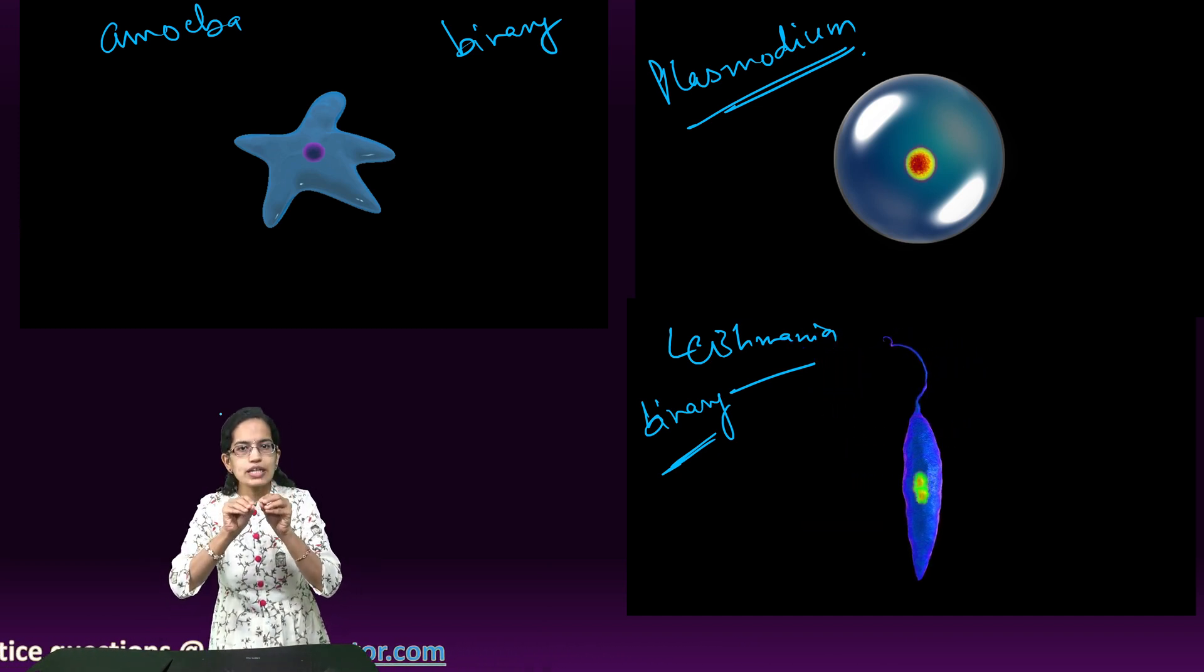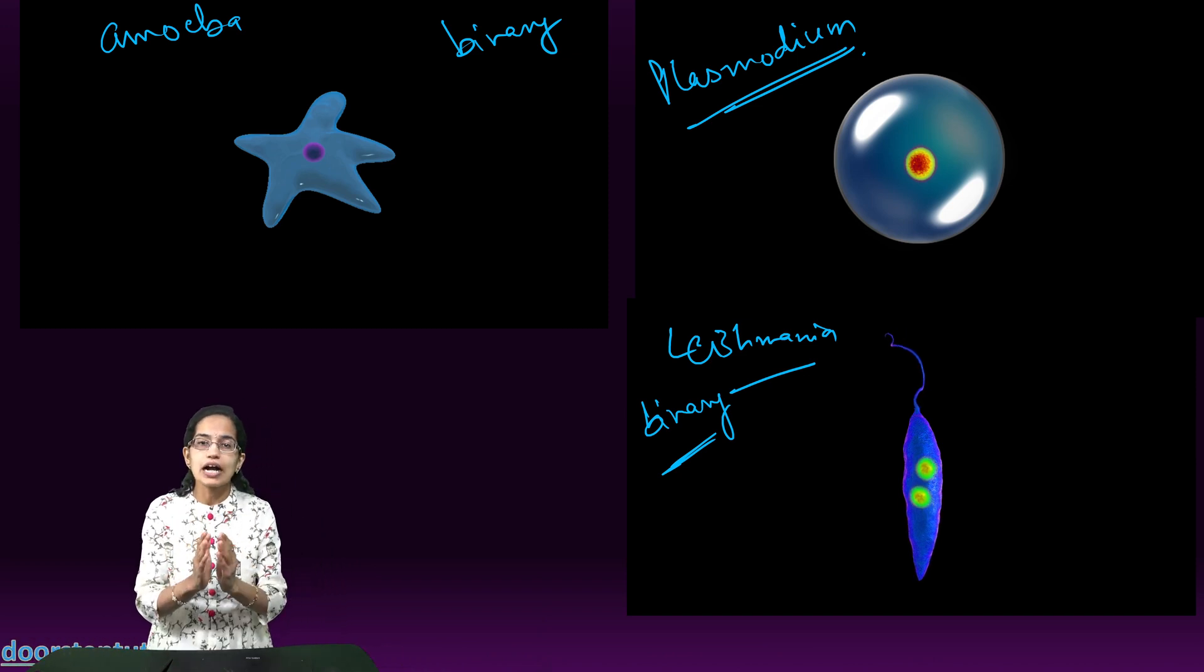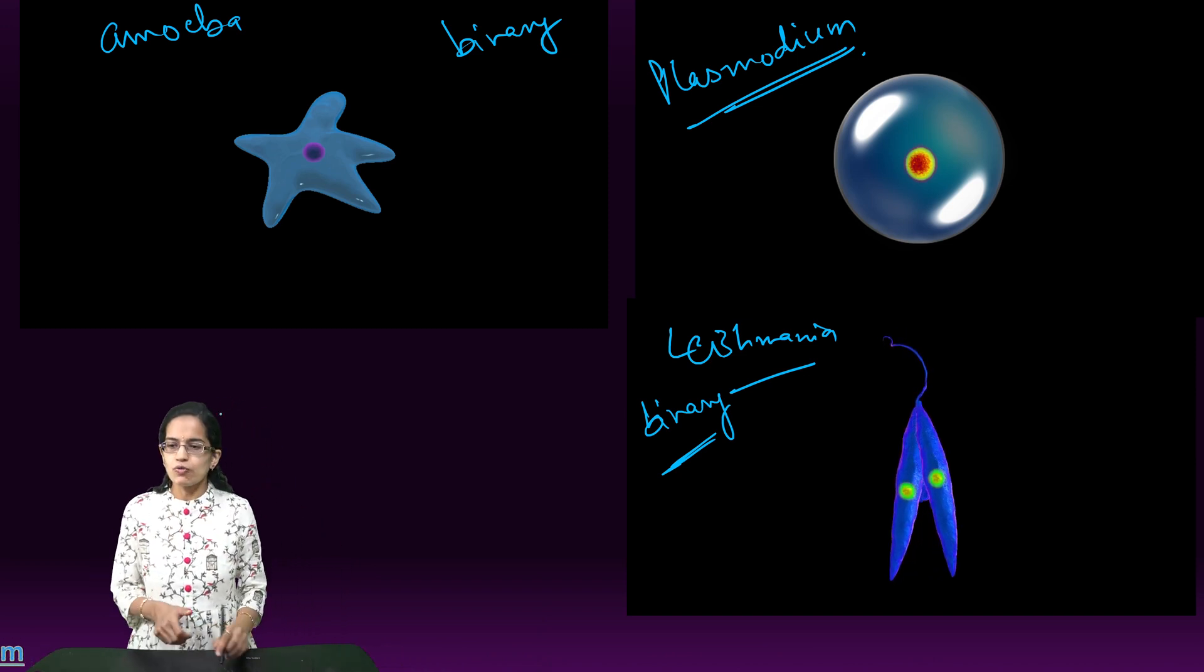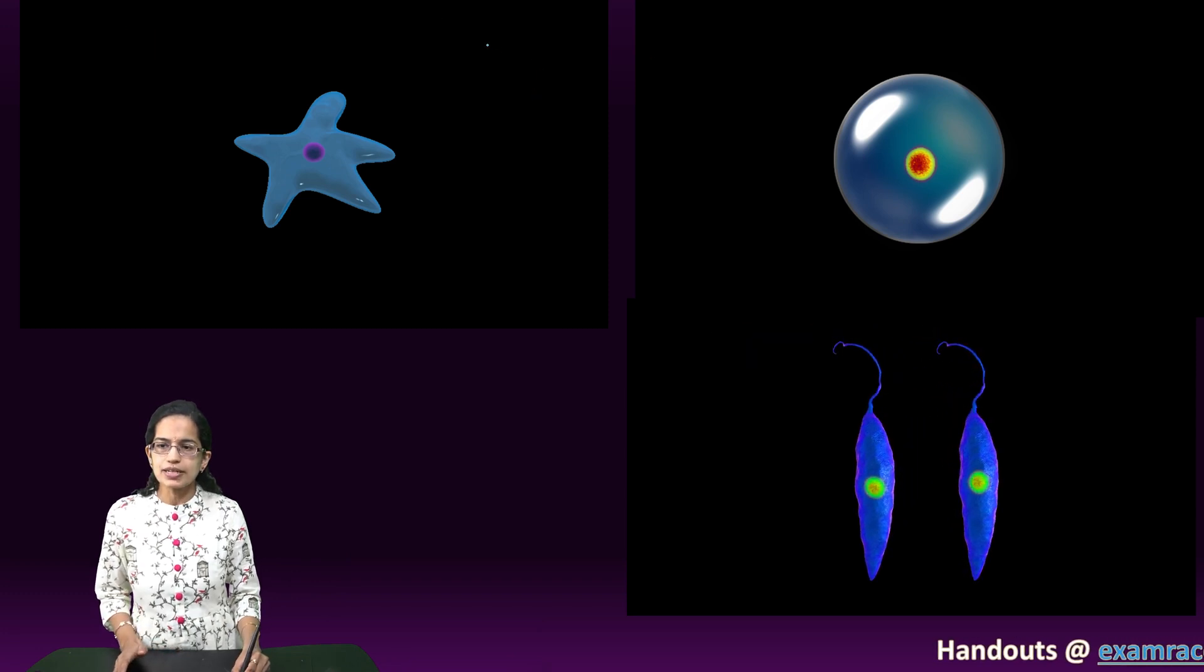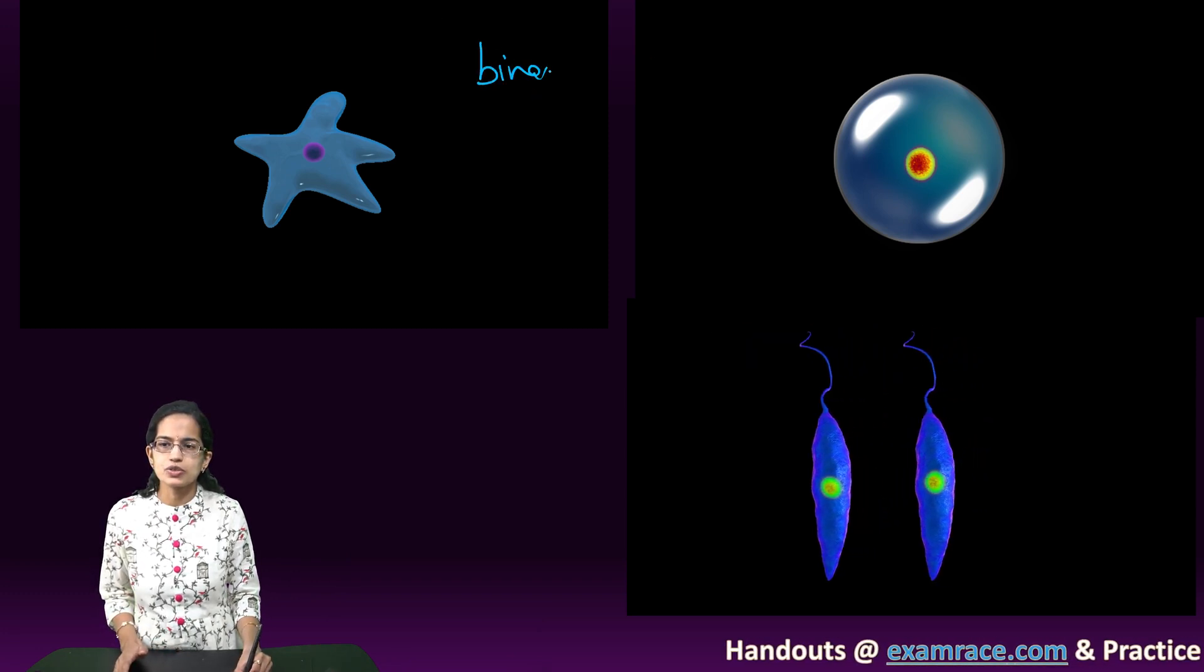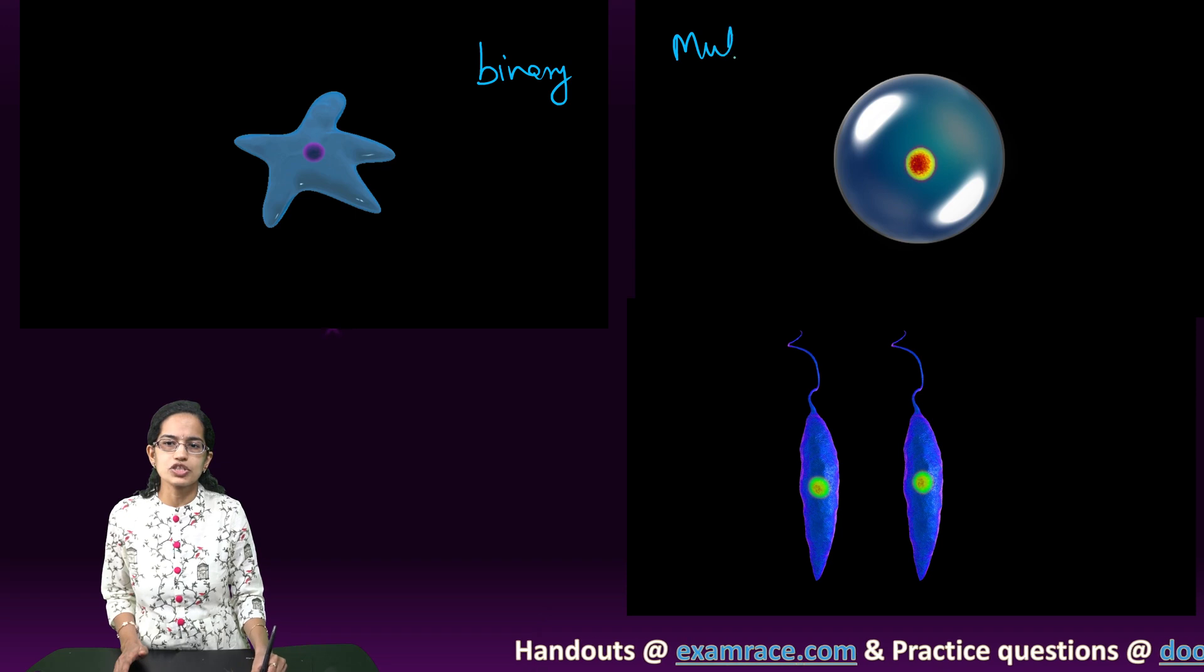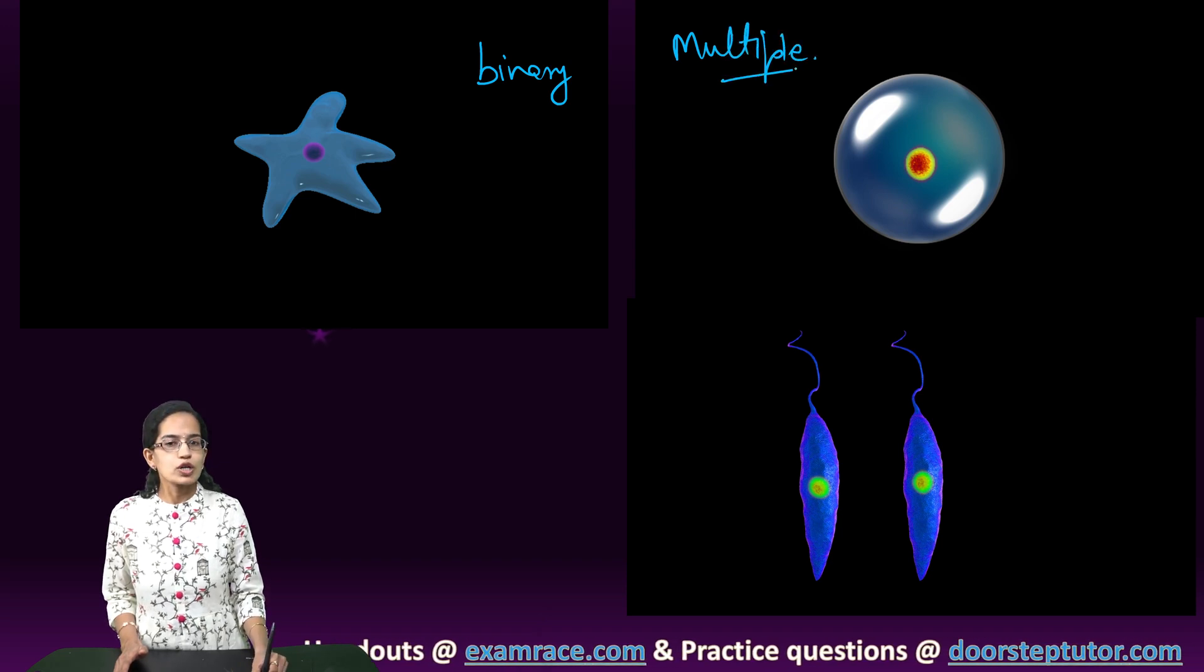The division of the nucleus and the cytoplasm occurs together. If I want to write down the difference, let me delete this and I want to write down the difference between binary fission and multiple fission. What is the most common difference?